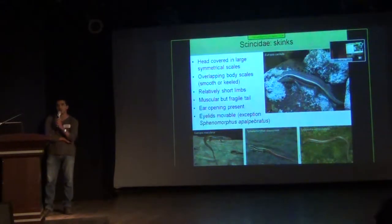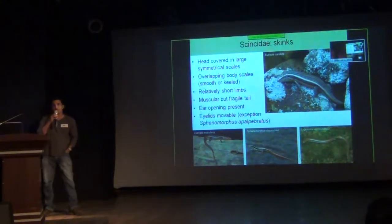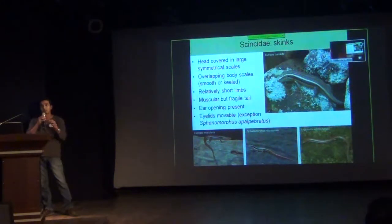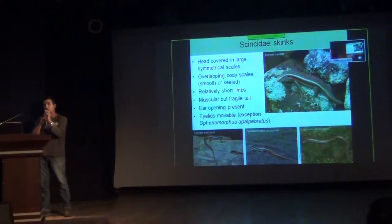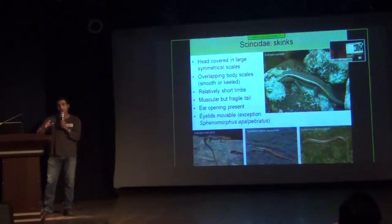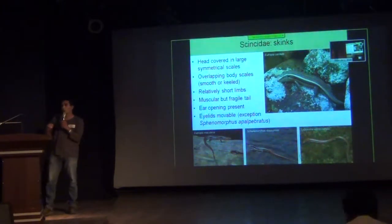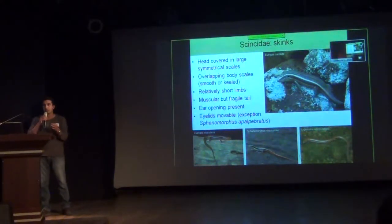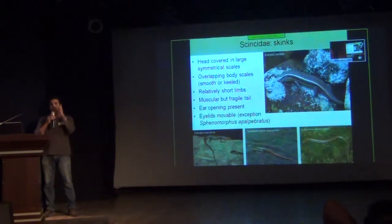The next group is one of the largest groups of lizards in the world — skinks. Skinks are characterised by heads covered in large plate-like scales, very snake-like. They have overlapping body scales which are much larger, not like gecko's granular scales. They have relatively short limbs, and you will see a nice progression within skinks — from fully formed muscular legs to progressively more elongated forms reducing limb length, to completely limbless burrowing species. They all have a very muscular but fragile tail with tail autotomy. The ear opening is present in all species, and eyelids are movable in most species, except a recently discovered species from Meghalaya — Sphenomorphus — which has gecko-like immovable eyelids.